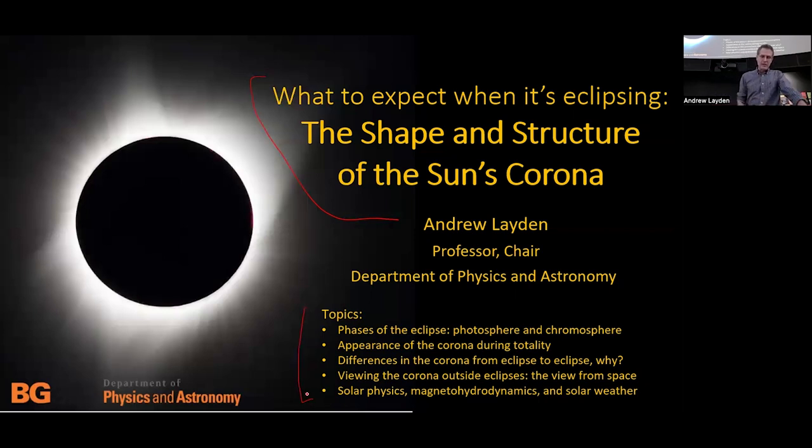These are some of the topics that I'll talk about tonight: reviewing some of the phases of the eclipse and introducing terms about different layers in the surface or atmosphere of the sun, the appearance of the corona during several different total solar eclipses over recent decades, why the corona appearance varies from one eclipse to the next, and how one might view the corona outside of eclipses from space.